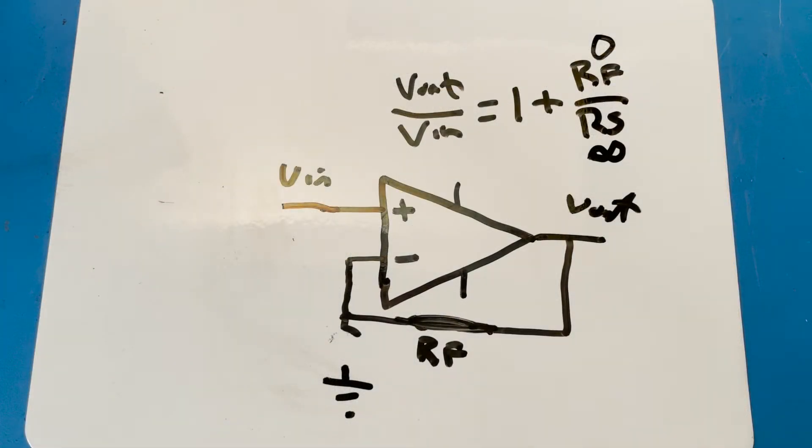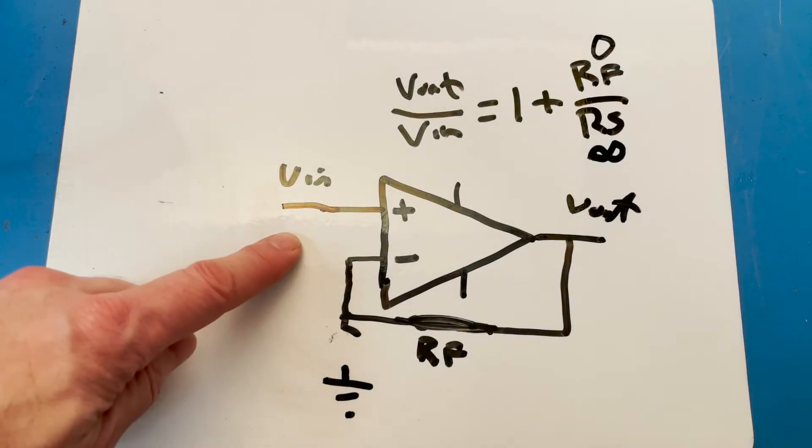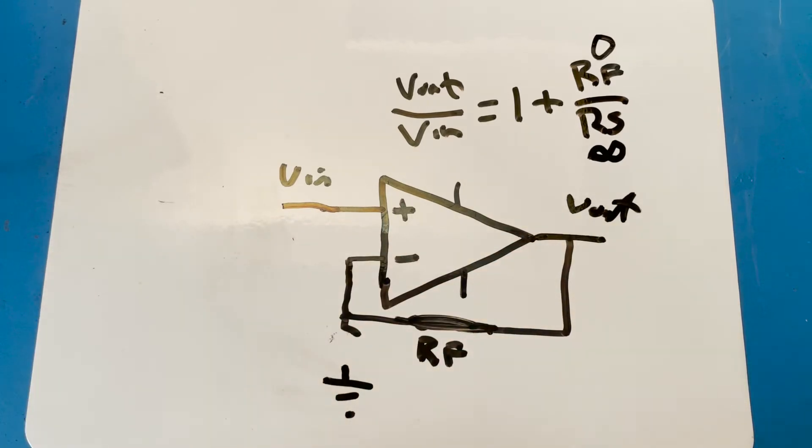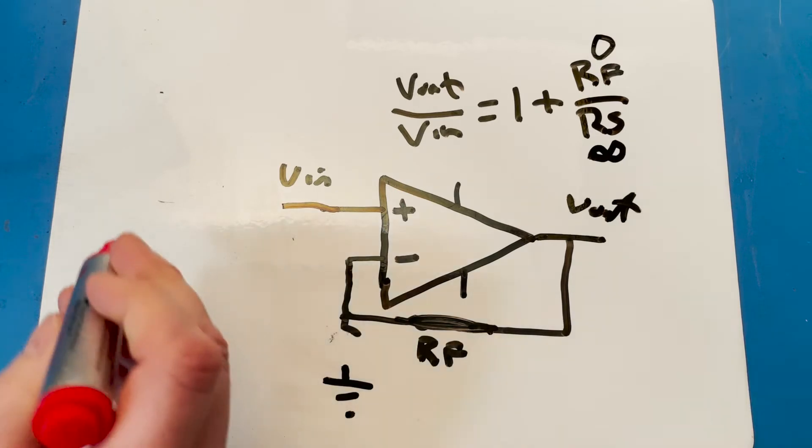Okay, great. So we just made an amplifier that has a gain of 1. So in other words, if I put 1 in, I get 1 on the output. If I put 2 in, I get 2 on the output. Well, what good is that? You're probably wondering.